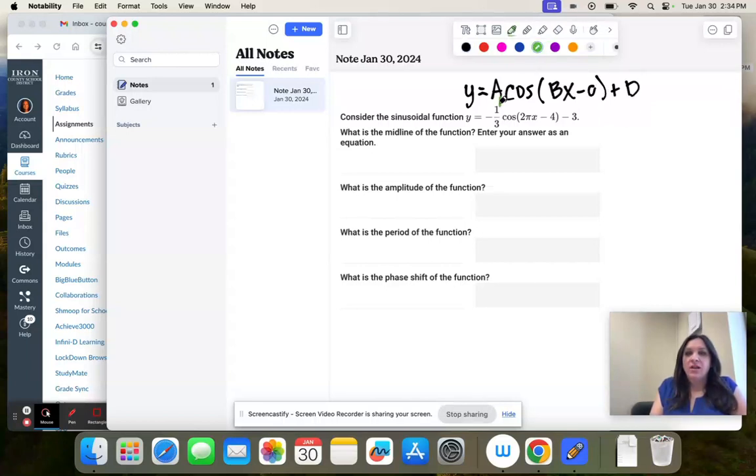So a is how we find the amplitude. We take the absolute value of a. So the absolute value of negative one-third makes it positive. So our amplitude is positive one-third.